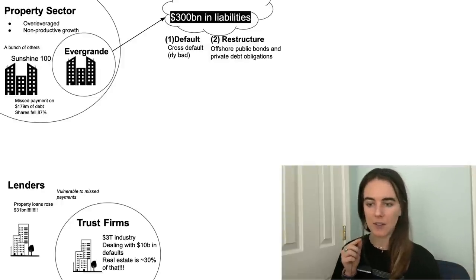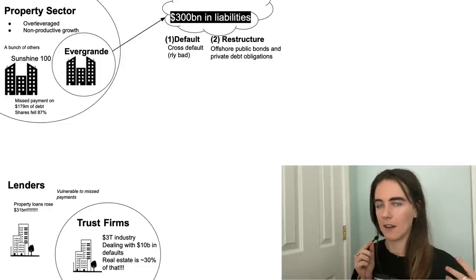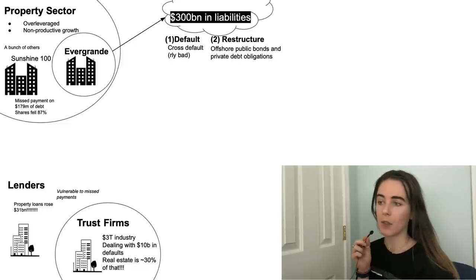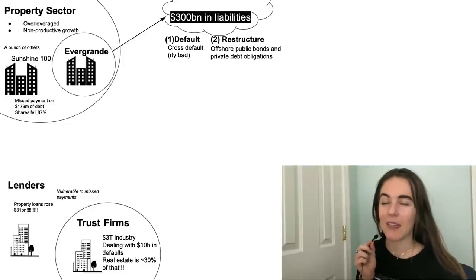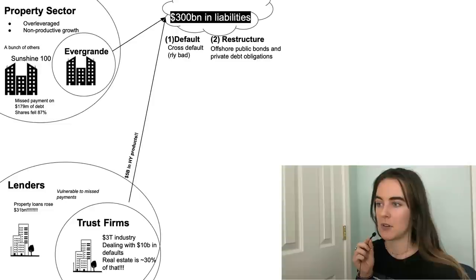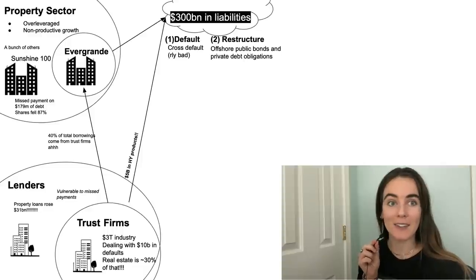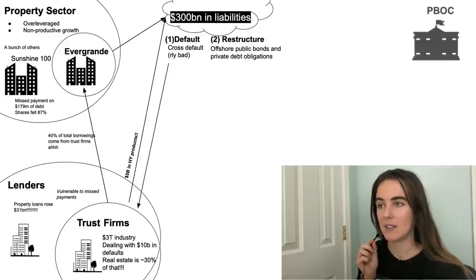There are also lenders within this ecosystem. Property loans rose 31 billion dollars this year and they're very vulnerable to missed payments. There are trust firms — investors and wealthy individuals who pool their money together. This is a three-trillion-dollar industry currently dealing with 10 billion dollars worth of defaults. Real estate is approximately 30% of those defaults already. These firms have five billion dollars of exposure in high-yield products to Evergrande, and 40% of Evergrande's total borrowings come from these trust firms.